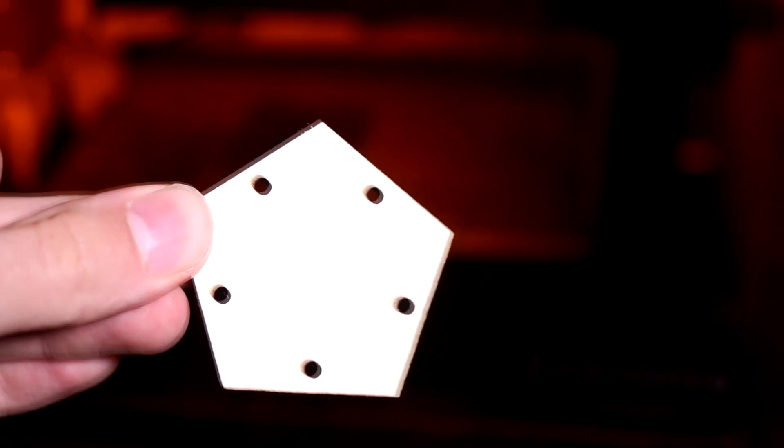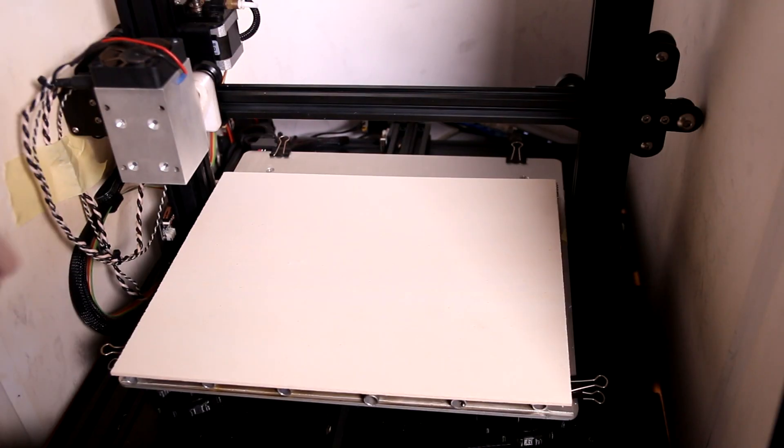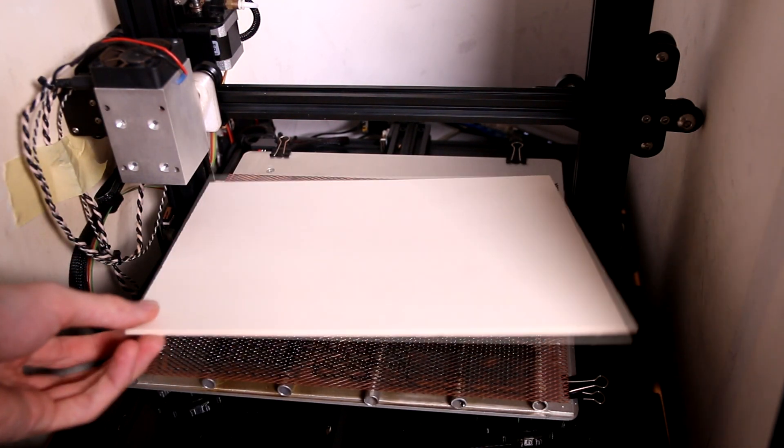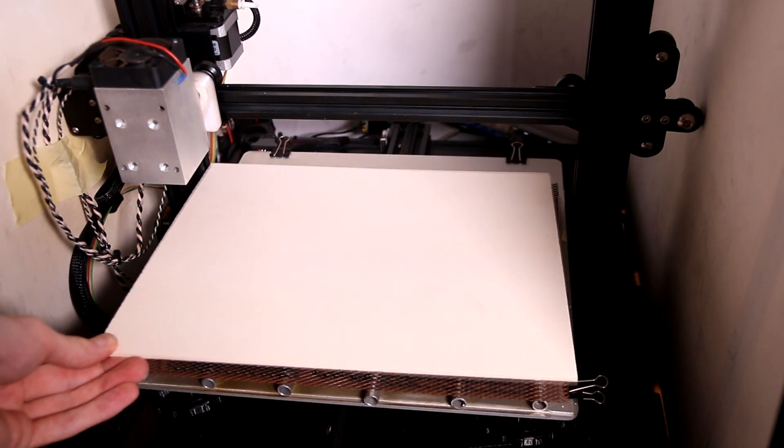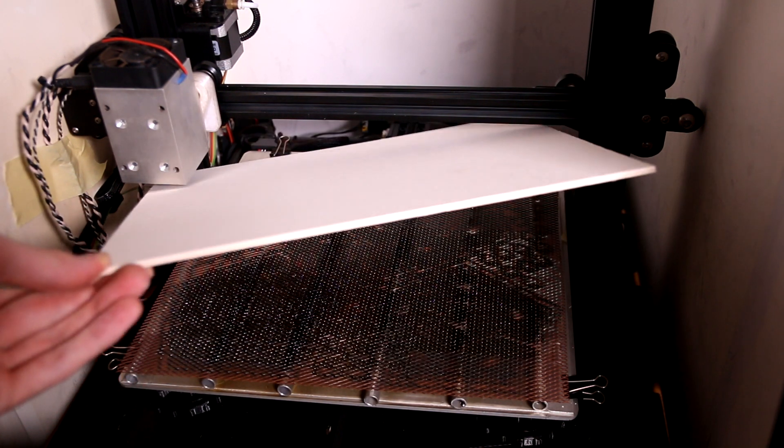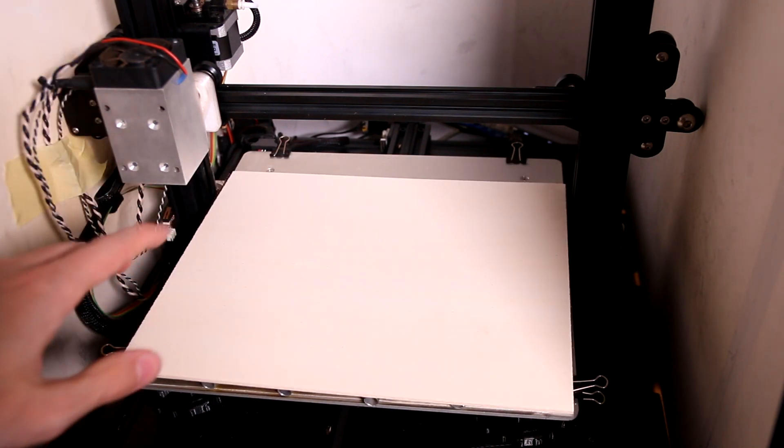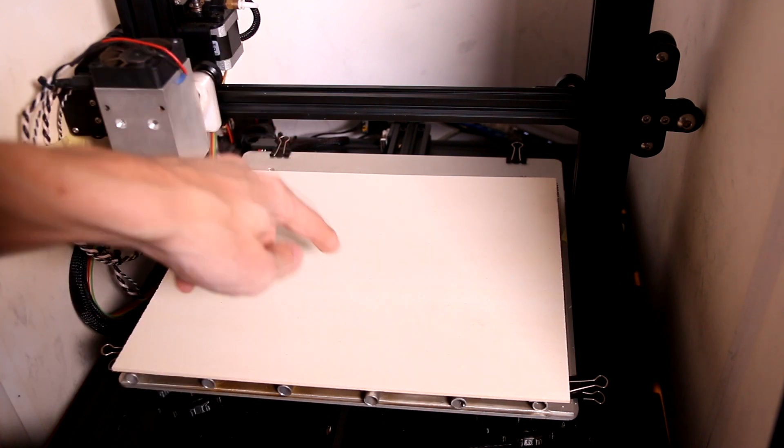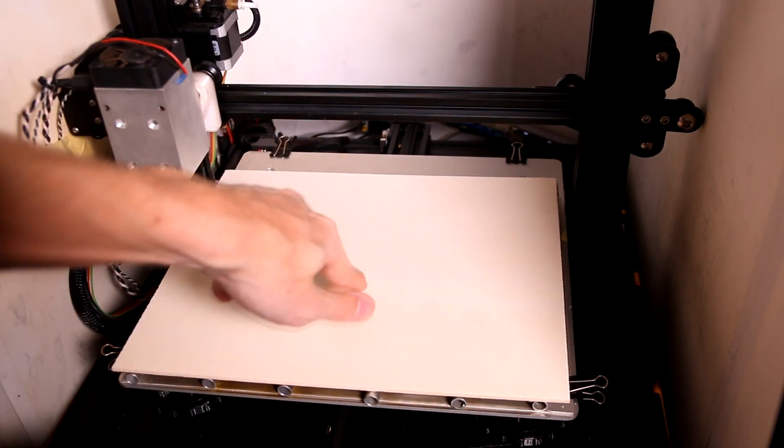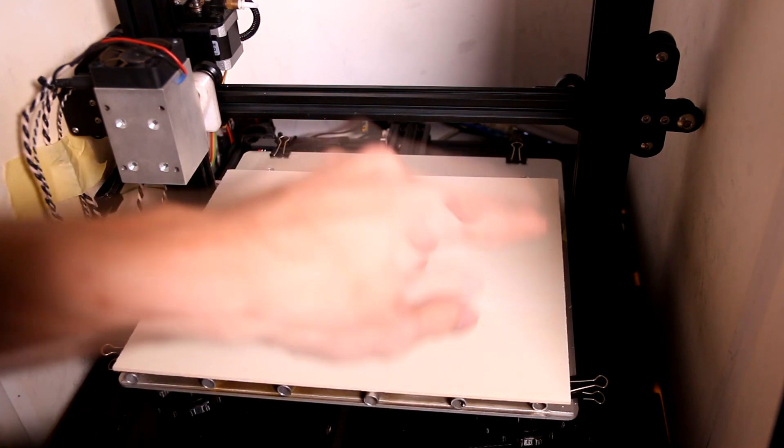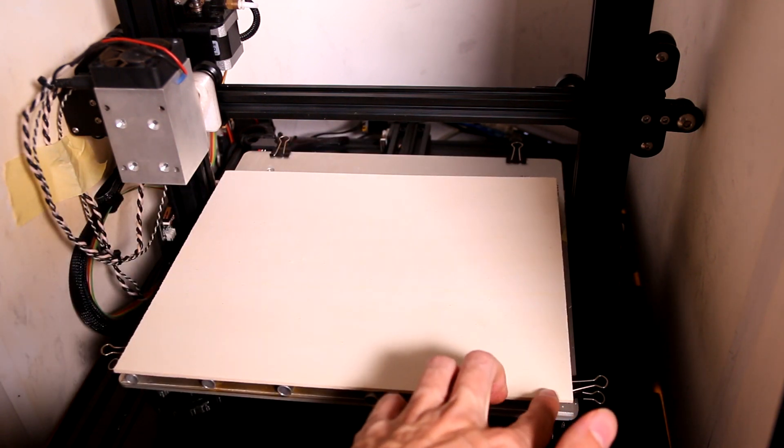One big issue with these cheap 3mm plywood pieces is that all of them have a slight bend to them. But I found a really easy fix for that, which is to make sure you put them on there so the middle is touching and it's kind of wobbly on the outside. Then I add some tape that's just barely covering it.